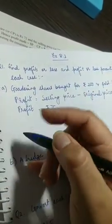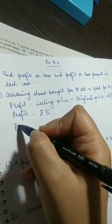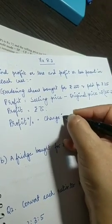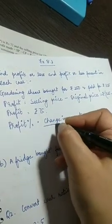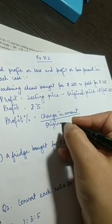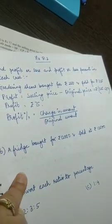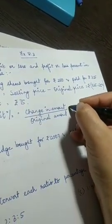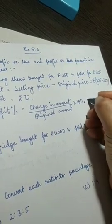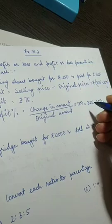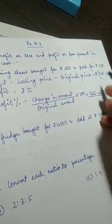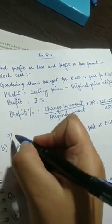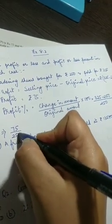Now what we have to calculate in the second part? Profit or loss percent. Profit or loss percent will be change in amount upon original amount. This is the formula like we did over here also. Amount of change and original amount percentage into 100. Here we have seen change that is 325 minus 250 upon original what was in the beginning, 250, into 100.